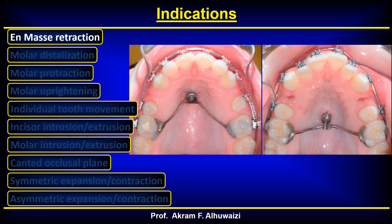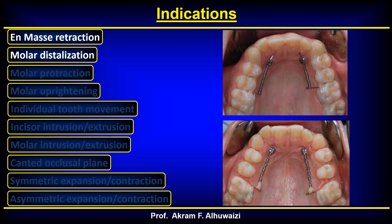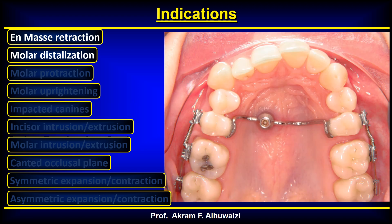Molar distalization can also be done using TADS. Notice that here the head type is the cross type, not the round type, and the wire is ligated to the TADS with an open coil spring to retract the molars directly. Another approach is doing it lingually by attaching a coil spring and bonding the wire to the molar from the other side. Another way is indirectly enhancing the anchorage of the anterior components and using regular mechanics from the buccal side to retract the molars using a coil spring.